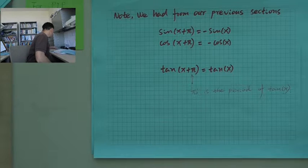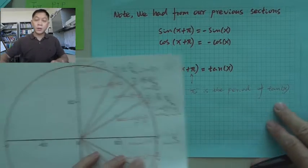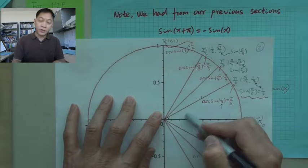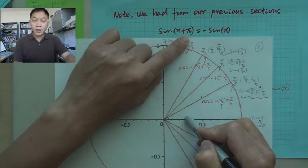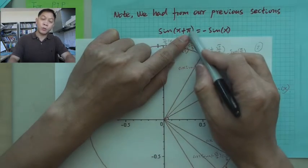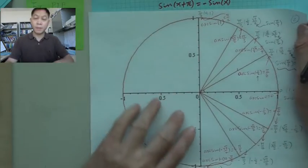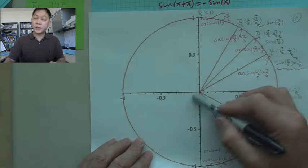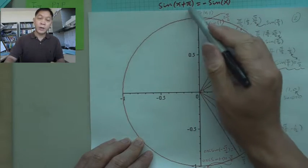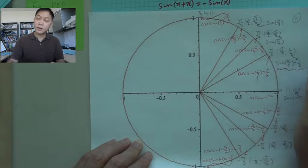If you want to see from the picture, you see down here, if x is any angle in the first quadrant, and then you add pi, it goes to the third quadrant. That's 180 degrees. And then if x in the first quadrant, y is positive. You add pi, it goes to the third quadrant. Y is negative, the y coordinate.